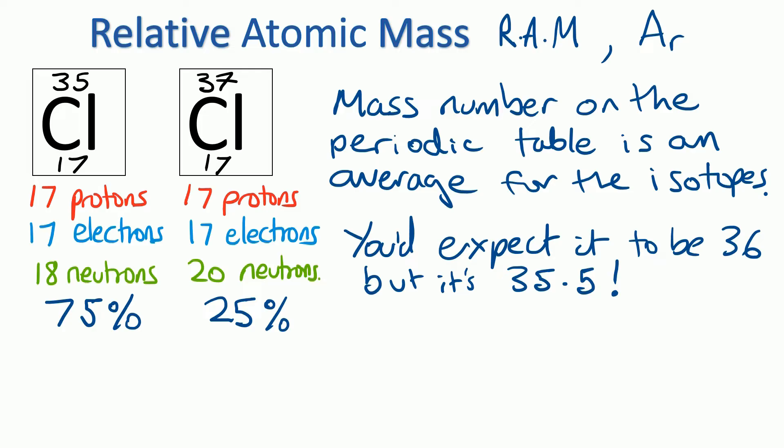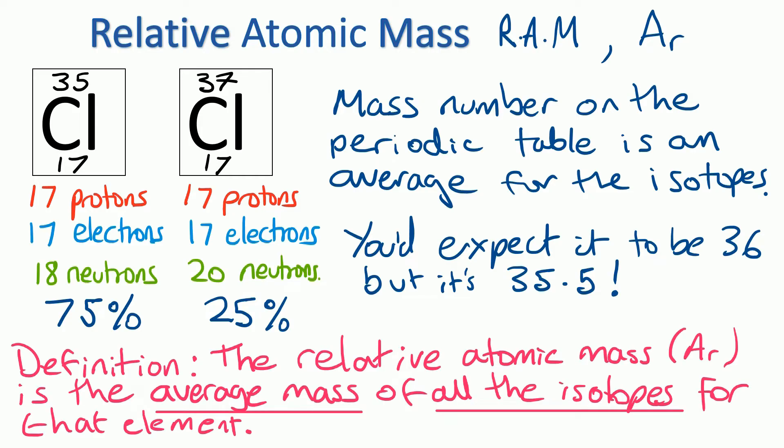For now, I want you to realize that the definition of relative atomic mass is: the relative atomic mass is the average mass of all the isotopes for that element. And now we're going to go on and see how we can actually calculate it.